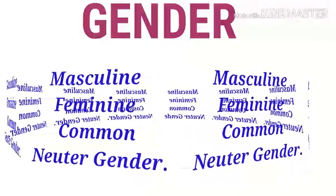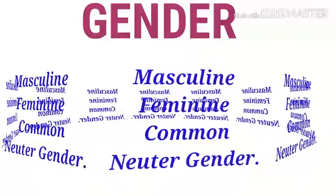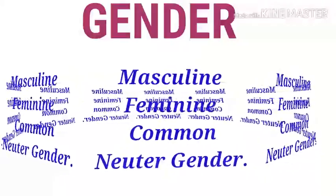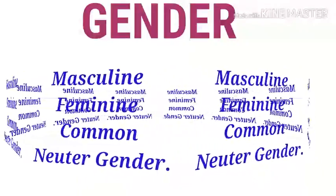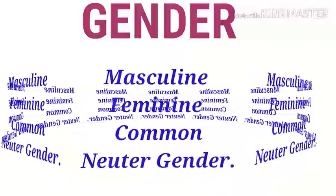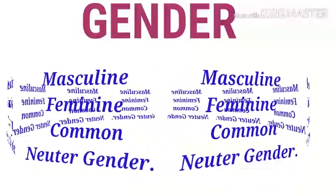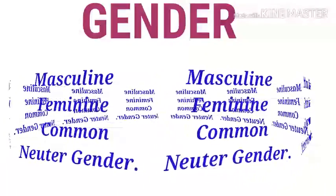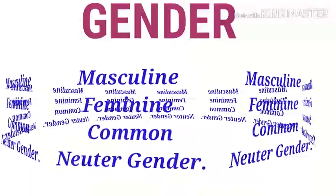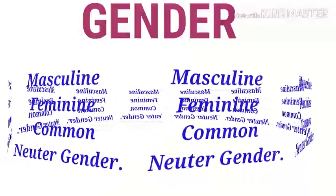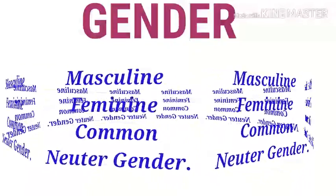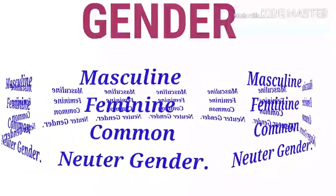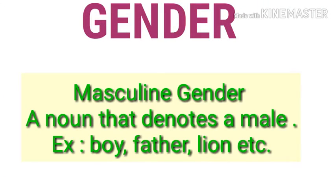We have seen or heard many times words like masculine and feminine. If I say a word like boy, girl, mother, or father, we know the differences about these words. As a whole, gender is divided into four parts: masculine gender, feminine gender, common gender, and neuter gender. Let us discuss each in detail.